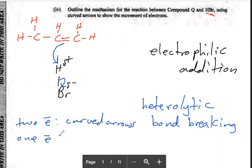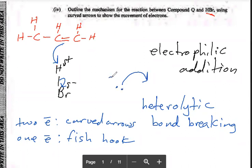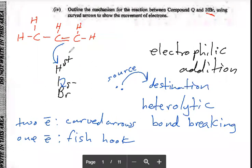For one electron, use a fish hook. Remember, the tail of the arrow is the source of the electrons and the arrowhead is pointing to the destination. The source of the electrons for the nucleophilic attack is the double bond and the destination is the hydrogen atom. Here, the source of the electron is the single bond and they are going to the bromine atom.